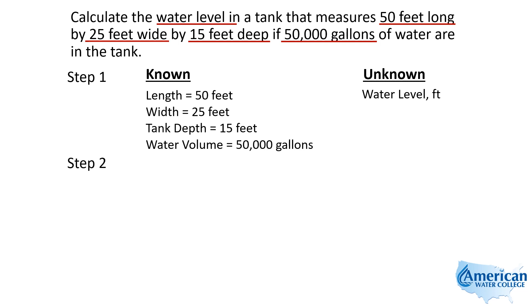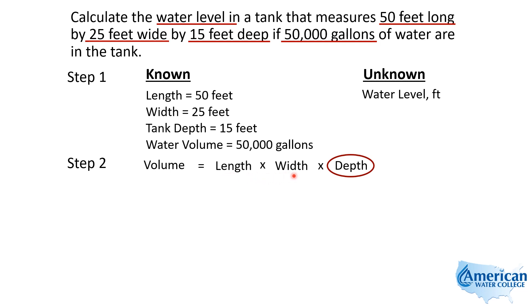Step 2 is our formula. We're dealing with the volume of a rectangular tank, so the formula is: volume equals length times width times depth. What we're looking for is the depth. They told us the volume — 50,000 gallons — the length — 50 feet — and the width — 25 feet. Under exam conditions you could plug those in, but you'll notice you have units of feet on one side and units of gallons on the other. So you need to convert the 50,000 gallons to cubic feet so your units agree before you can do the math.